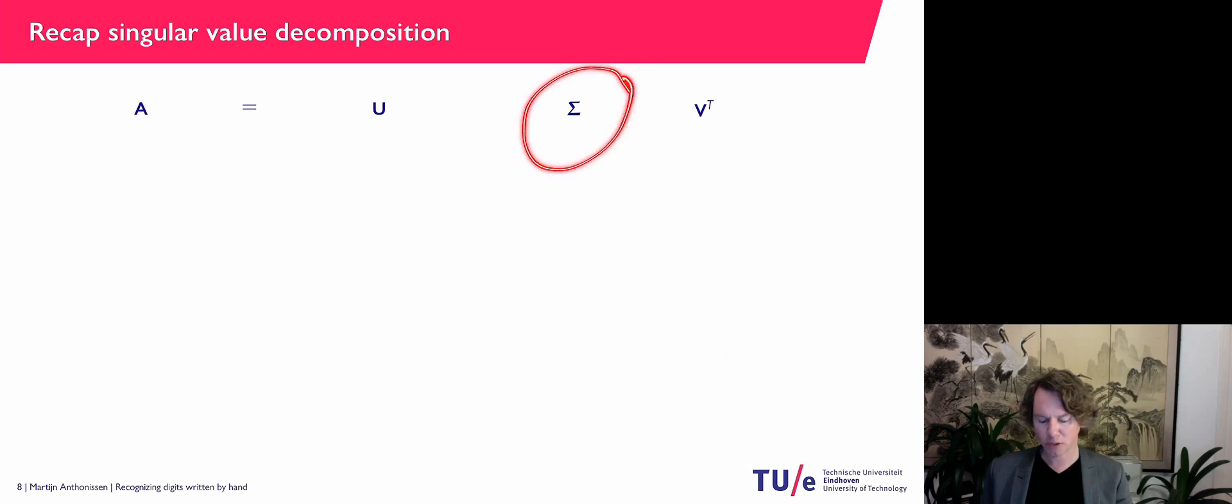This sigma has the same size as A in its diagonal. So only non-zero entries on the main diagonal and 0 elsewhere. This U here is going to be orthogonal. And this V is also orthogonal. And recall, an orthogonal matrix means that the transpose is the inverse.